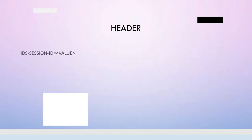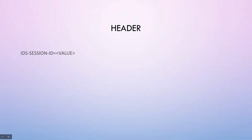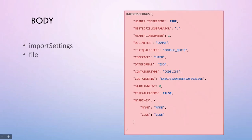The first thing we need for the REST call is the endpoint, which we will see while executing the request. Then we need the header parameter — we need to pass the session ID. If you have not followed my previous lecture about how to get the session ID, I would strongly recommend going through that first. That will give you the session ID we can use in this request. The next thing needed is the body section, which requires two parameters: the import settings and the file.